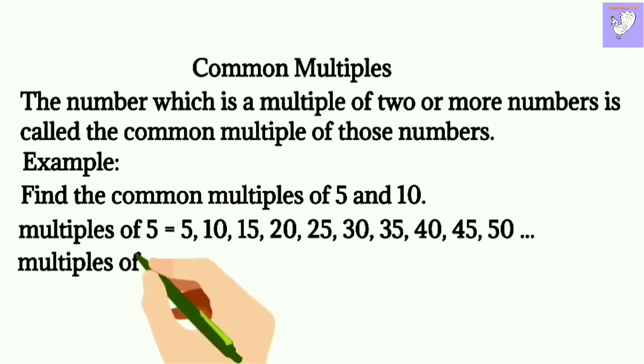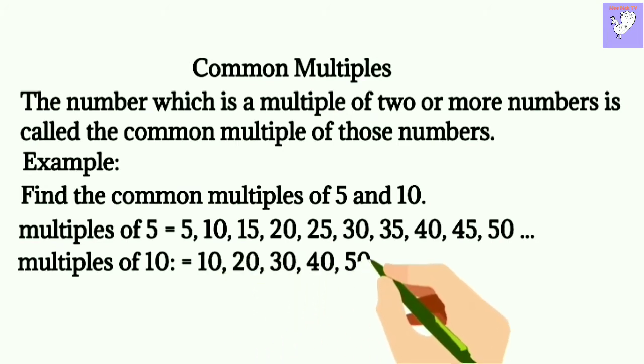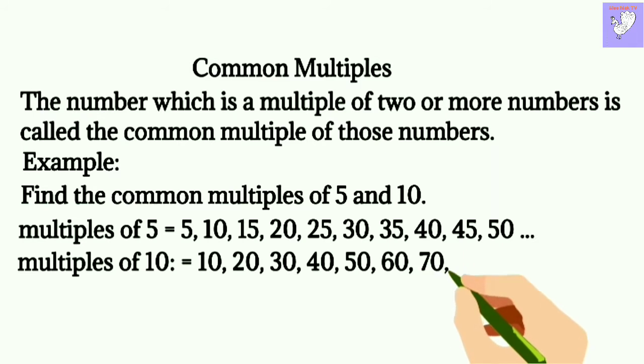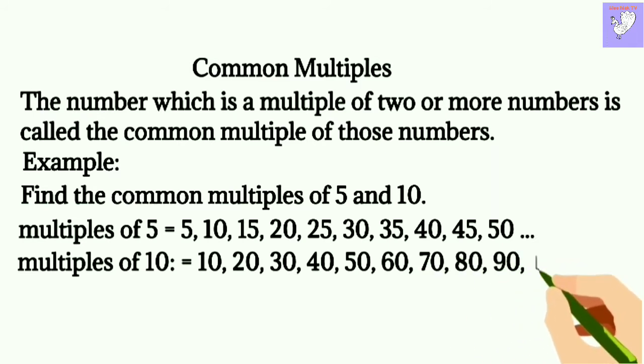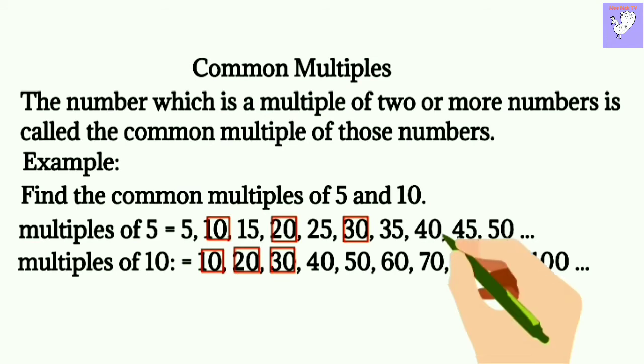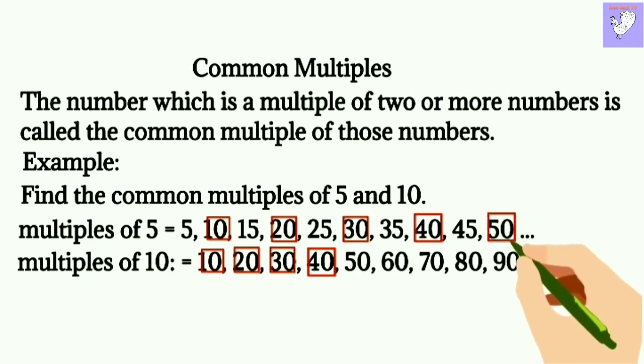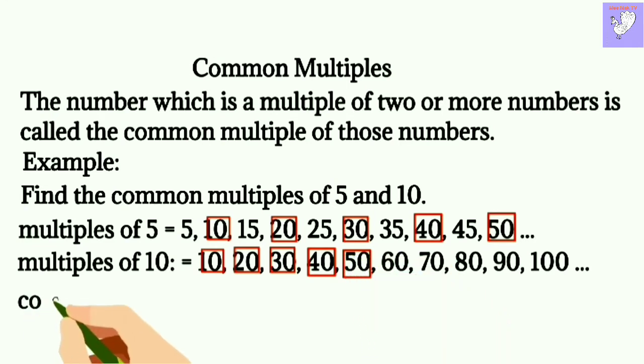Multiples of 10 are 10, 20, 30, 40, 50, 60, 70, 80, 90, 100. Now, we are finding the common multiples, that is the multiple of two or more numbers. So here, the common multiples are 10, 20, 30, 40, 50 and so on.